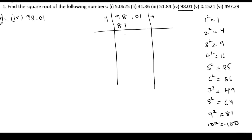The remainder is 7. If we subtract 81 from 98, we get 17. We bring 01 down. We write 9 again, so 9 plus 9 is 18. The nearest number to 1 — in 1 squared we get 1, in 9 squared we get 81. So we get 1 in the 9 squared. So 9 into 9 is 81.